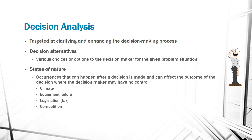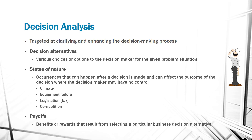States of nature are things that can affect the outcome of your decision, but that you have no control over, such as the climate. Maybe you decide to build in Florida, a hurricane comes through — bad decision. Equipment failure, taxes could go up, you can't always gauge what the competition is going to do. And then finally, the payoffs, which are the benefits and rewards that result based off of the decision that we actually make.